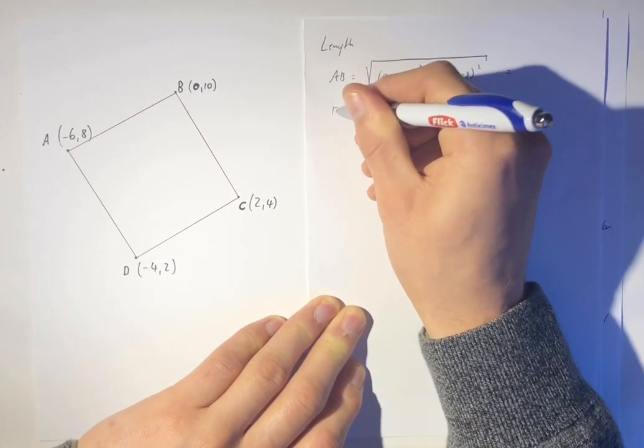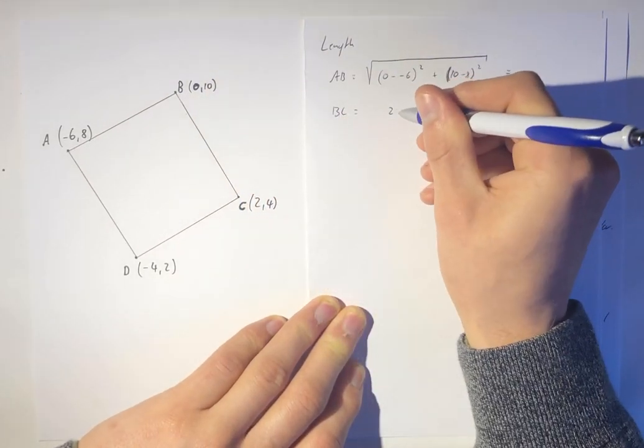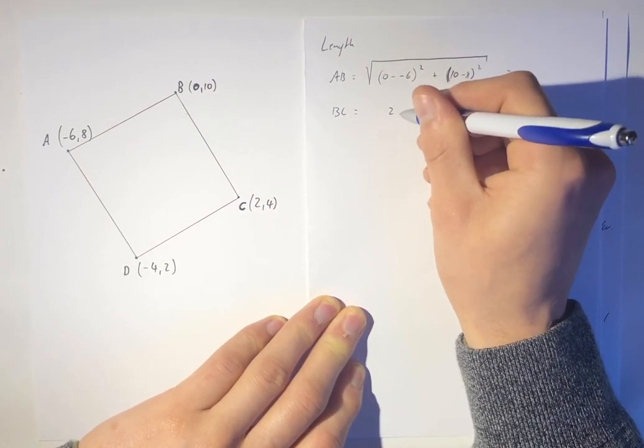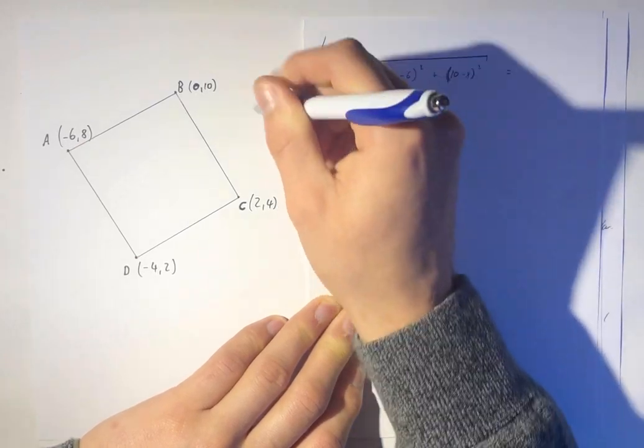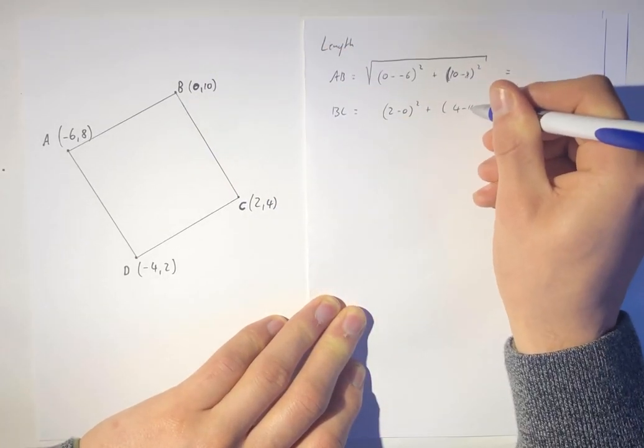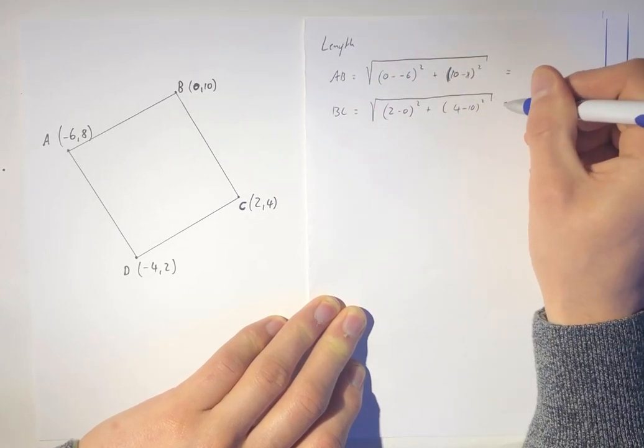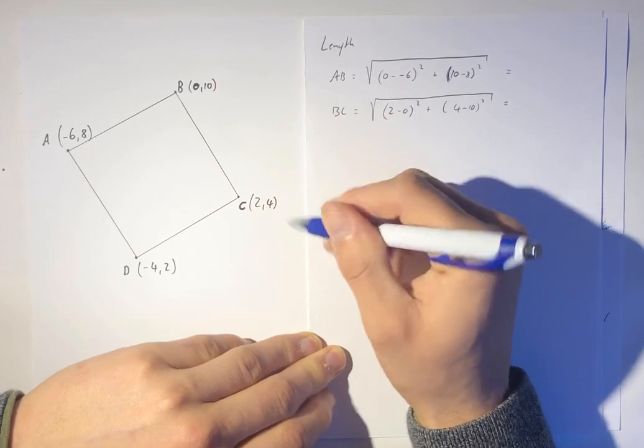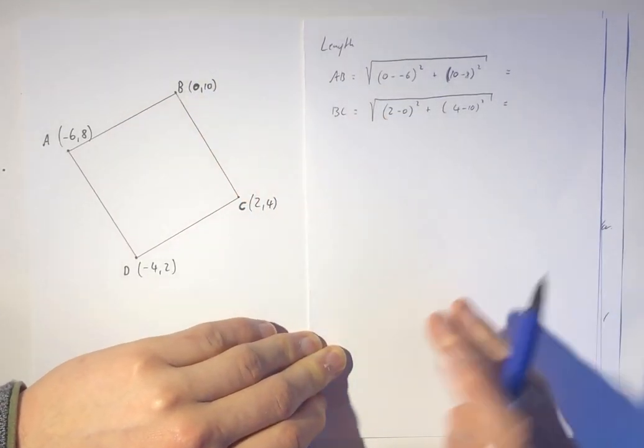Then we'll calculate BC, which is the difference in x squared, so two minus zero squared, plus the difference in the y squared, four take away ten squared, and it's all square rooted. Notice that my rightmost point is the one that I'm subtracting the leftmost point from.